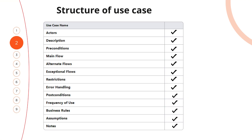Structure of the use case. A use case consists of the actors, description of the use case, preconditions, main flow, alternative flow, exceptional flow, restriction, error handling, postcondition, frequency of use, business rules, assumptions, and notes.